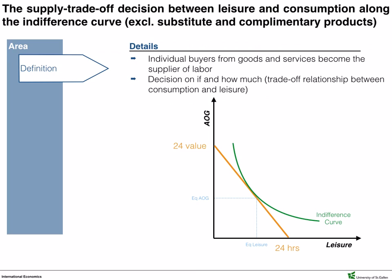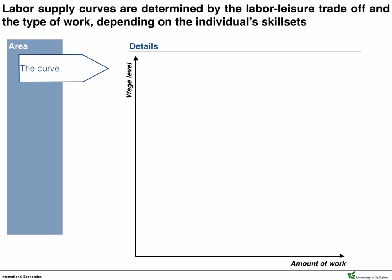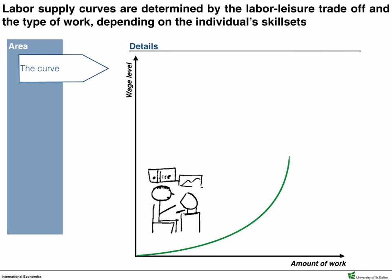The supply of labor is based on the trade-off decisions workers have to make between work and leisure time. Workers can either not work and enjoy 24 hours of leisure time, or work and thereby earn income, enabling them to buy goods of an equivalent of the 24-hour income. Their decision of what to give up moves along on indifference curves. Consequently, the shape of the supply curve is determined by two factors based on that trade-off. The substitution effect shows that if wage levels increase, the opportunity cost of leisure time will increase, resulting in workers willing to supply a higher amount of work. Hence, the supply curve is upward sloping.